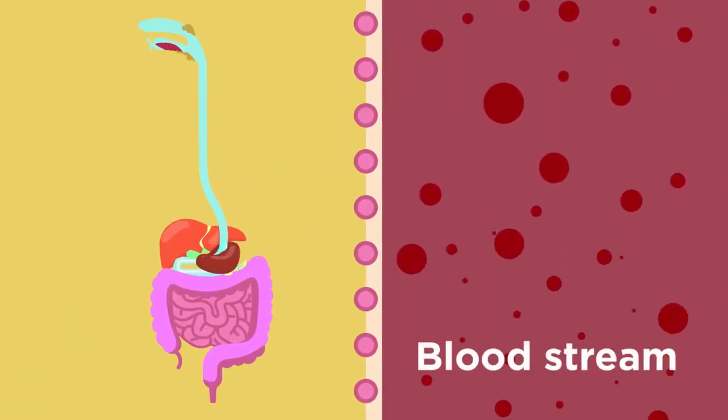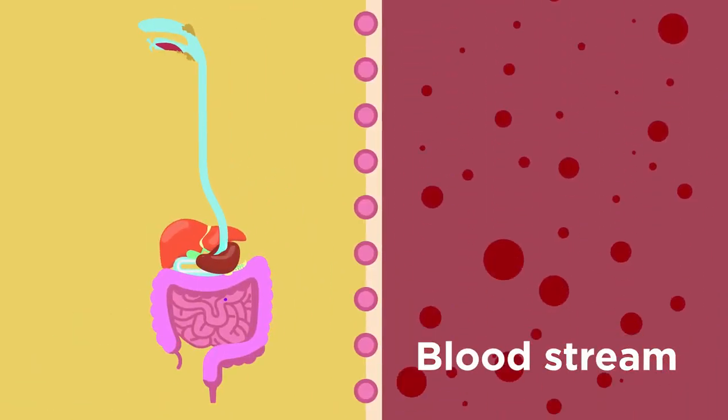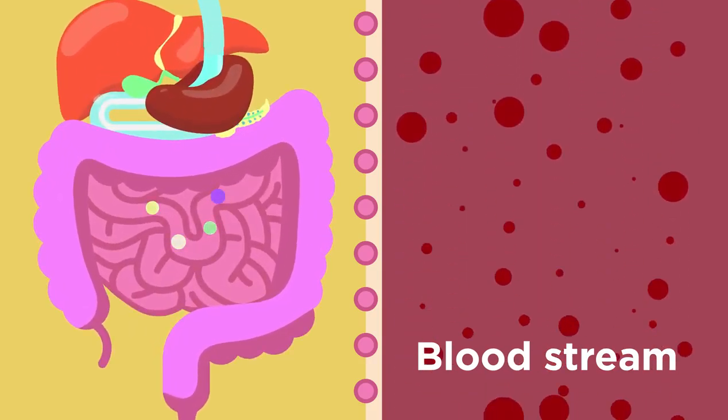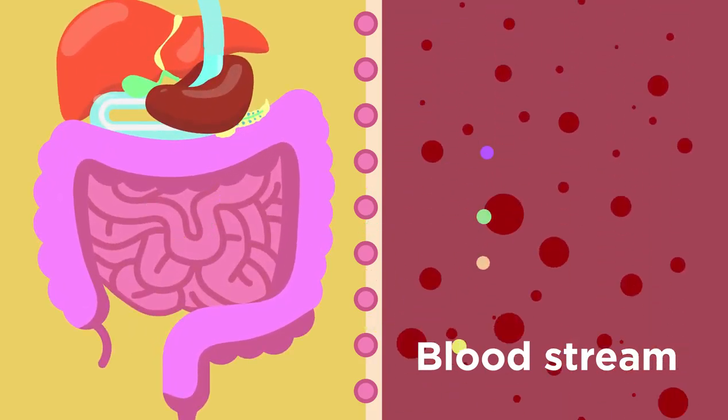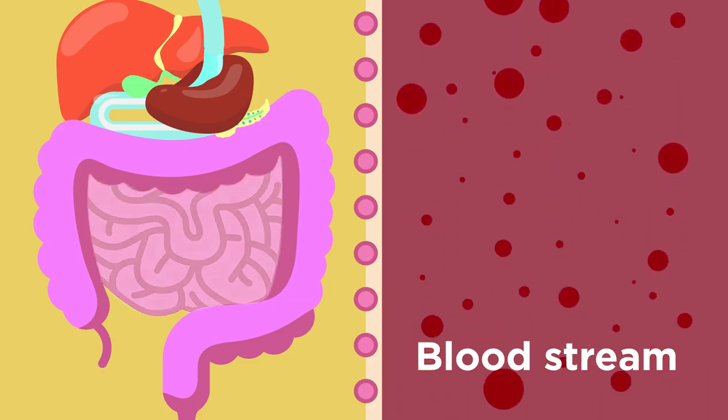But the job of the digestive system doesn't stop at digestion. For our body to make use of these small soluble molecules, we need to absorb them into our bloodstream. This happens in the small intestine.